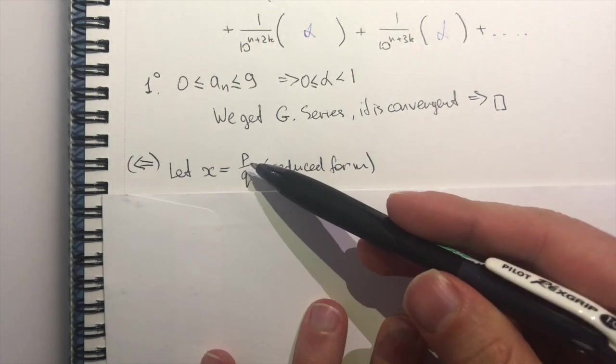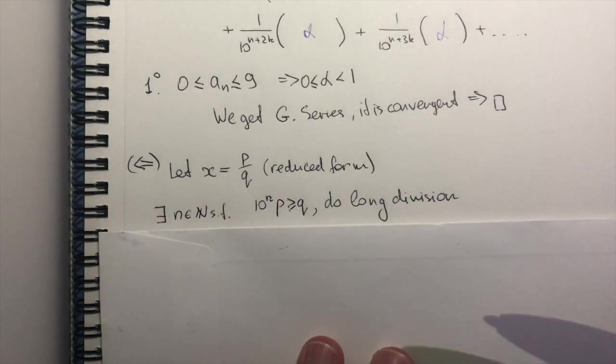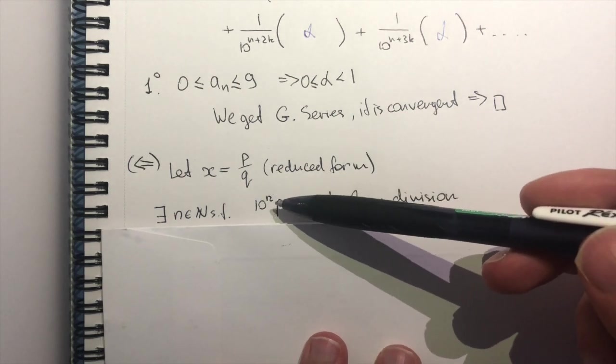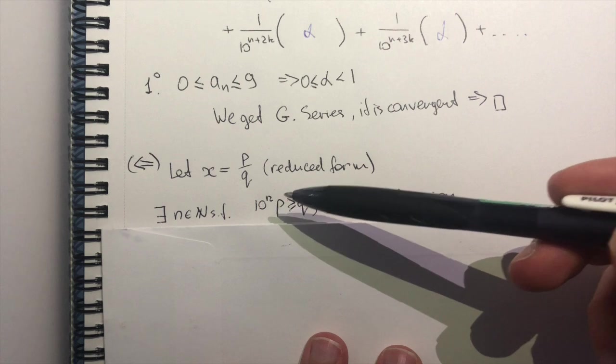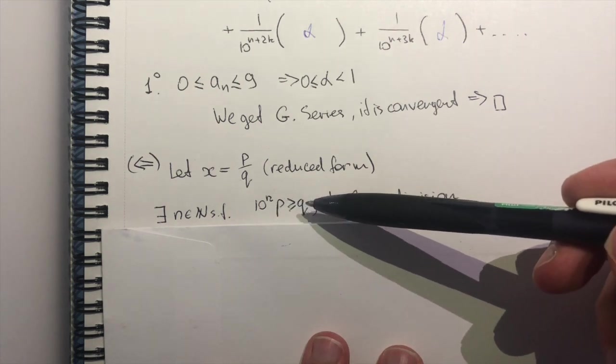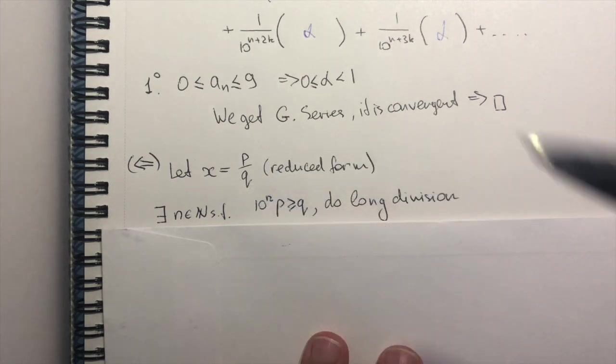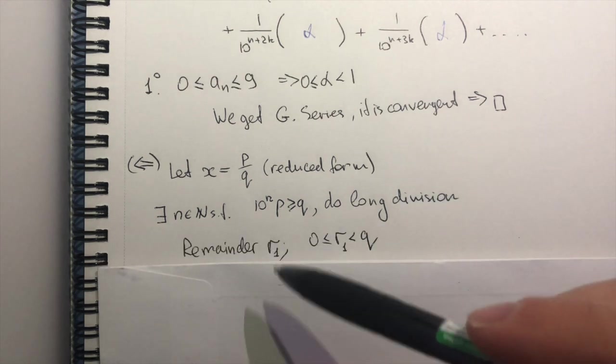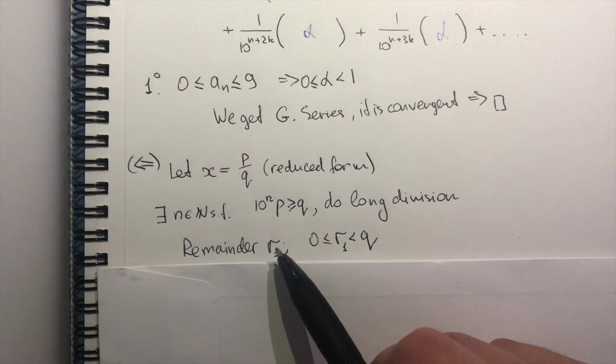So what can I do? Well, I can do long division, right? So remember, there will be some power of 10 such that if I multiply it by p, I will surpass q and I can perform long division. And I will possibly get my first remainder.